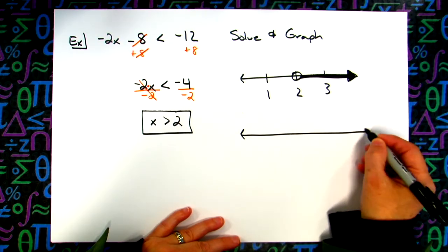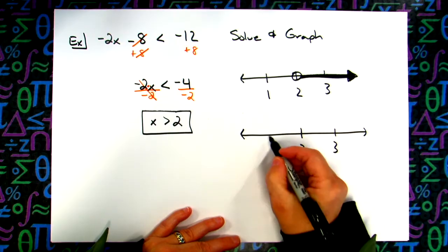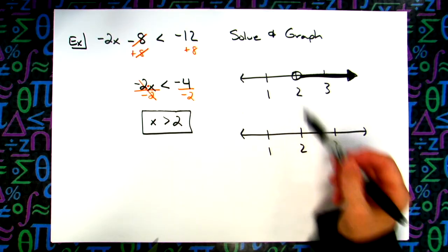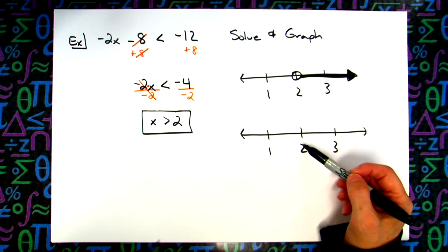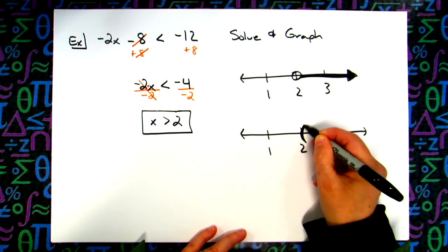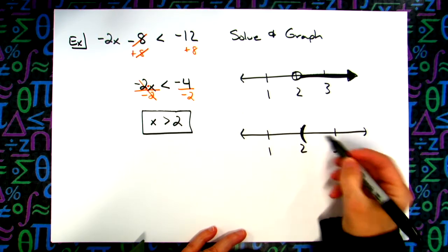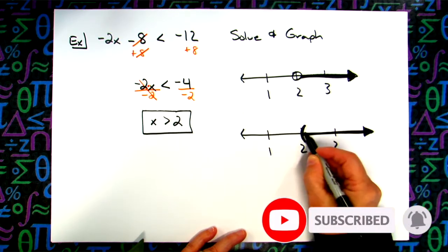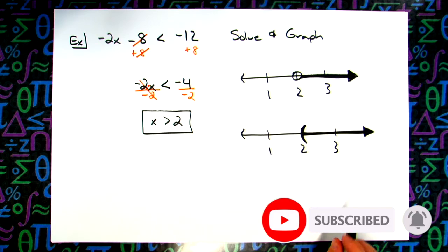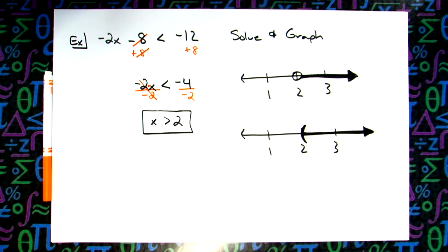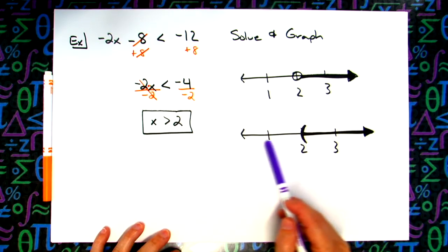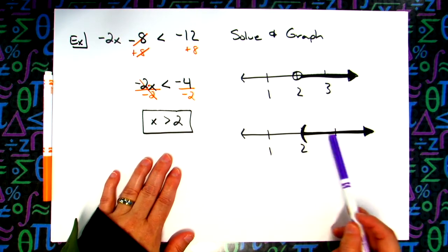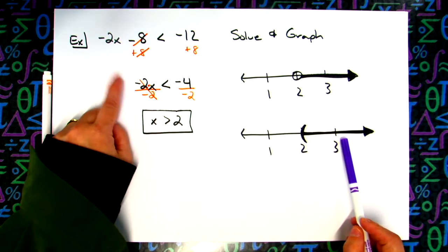Two days ago I also showed you another way, leaning toward interval notation. When it's an open dot, we can use a curvy bracket and make the curve go the way we're shading — curvy bracket going this way. That's the exact same thing. Now let's go one step further. There is this thing called interval notation. If I draw something on a number line, this tells me where the answers to this inequality lie — all these numbers make the inequality true.